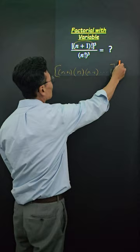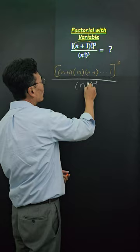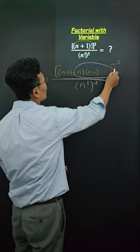We also have n factorial to the third power in the denominator. But we notice that n times n minus 1 down to 1 is the same thing as n factorial.